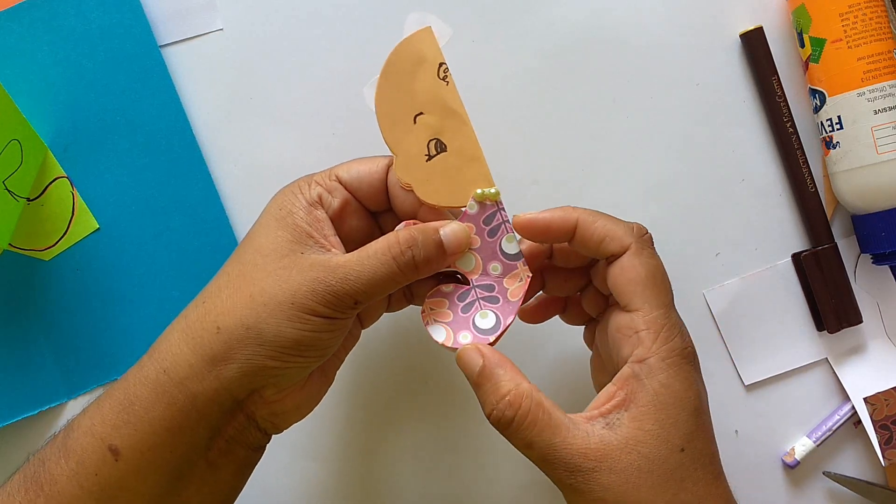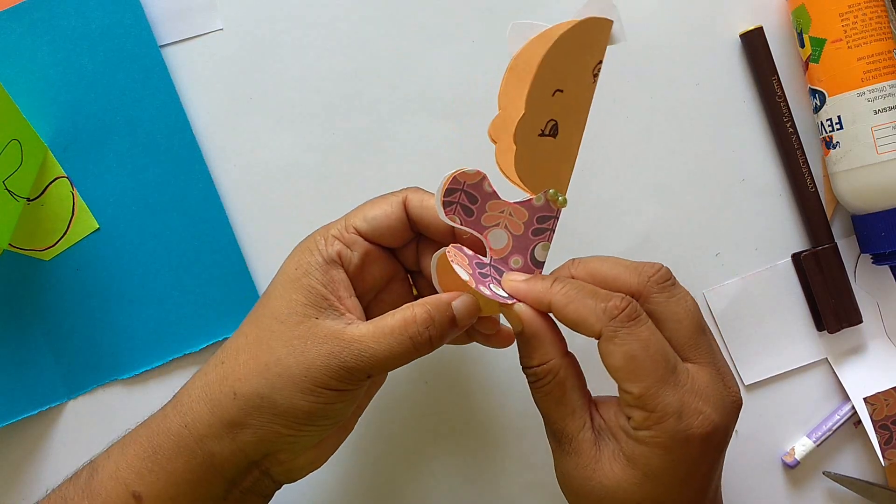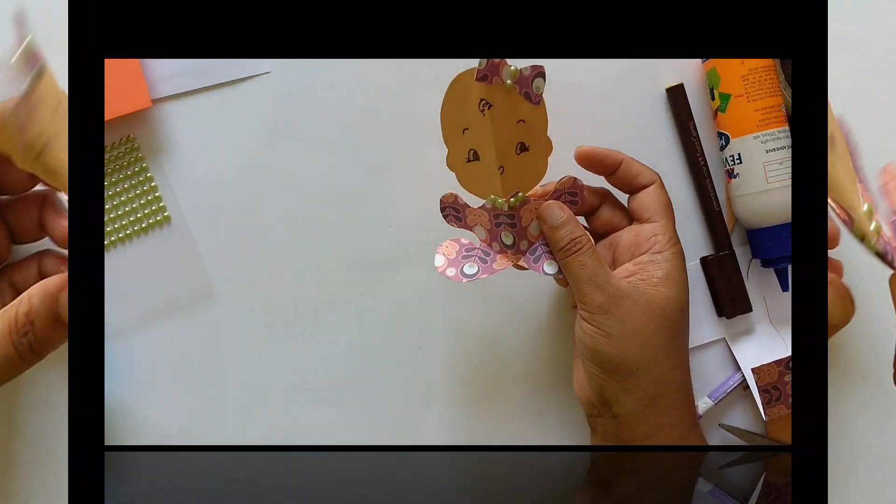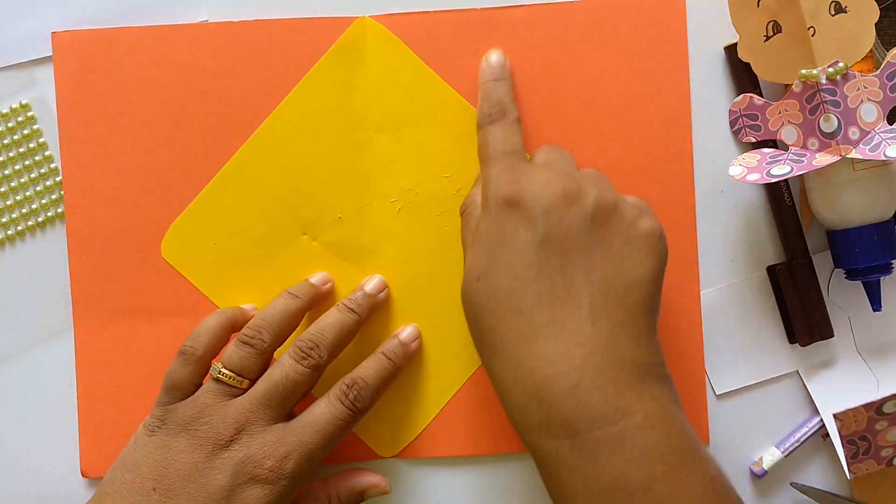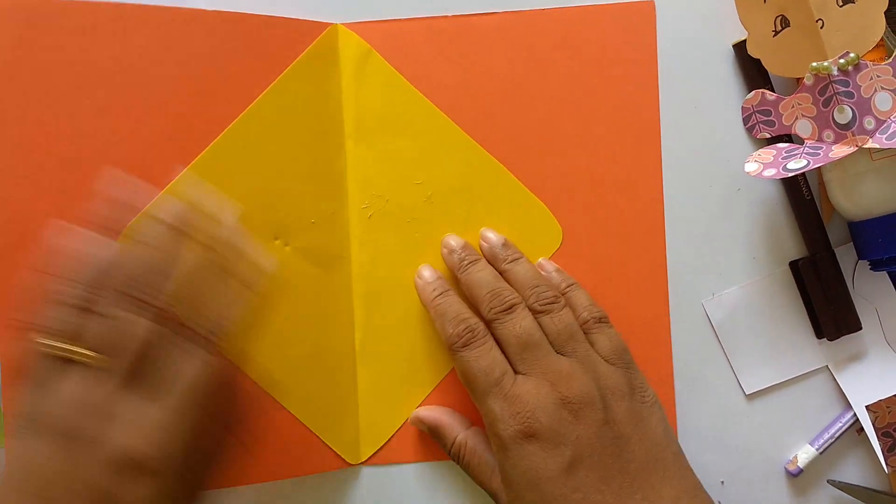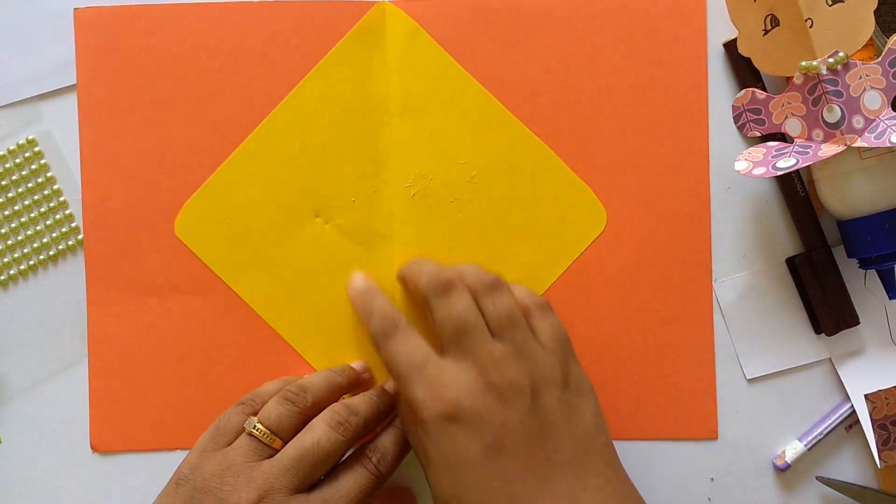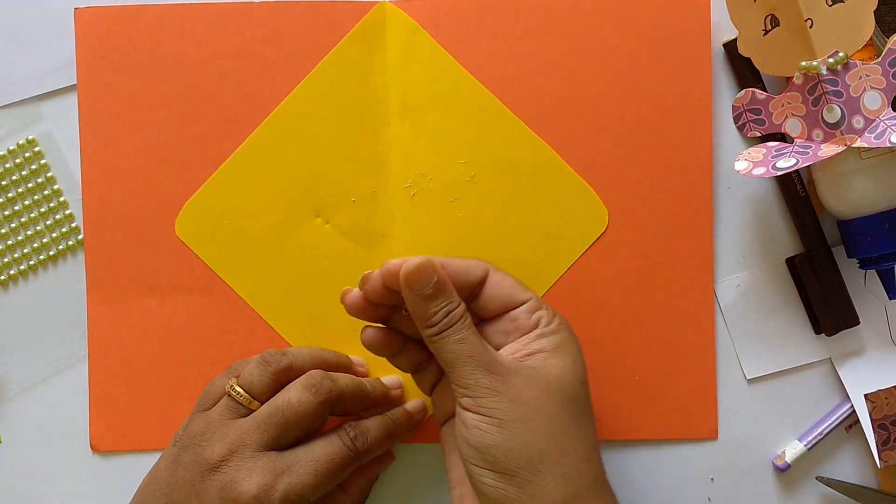Along this way. Take your base shape, this is my base shape, hold it in half and I've sticked a square paper for baby mat. You can take a pattern paper also.